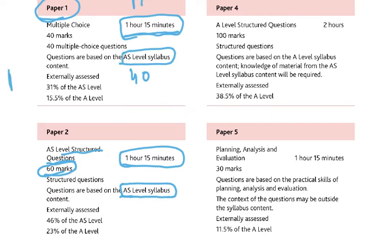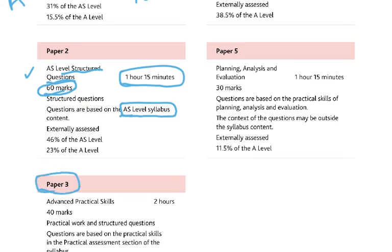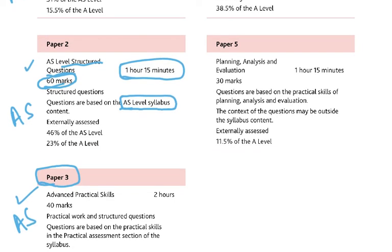So if you're going to take the AS exam, you have to take Paper 1, Paper 2, and Paper 3. Paper 3 is a component you must take at the AS level. If you're doing the AS level in 2023, some schools do it and some don't. Paper 3 is practical work — 2 hours of lab work, examined in the lab. In the last 2 years Cambridge has allowed an exemption, so some students have not taken Paper 3.